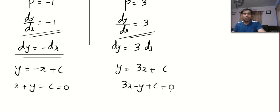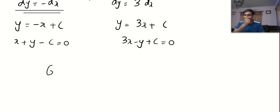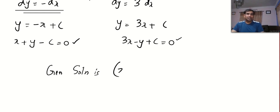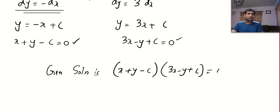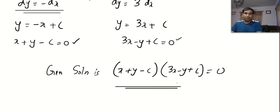Now what will be the general solution? We got the individual solutions. The general solution is: x plus y minus c, multiplied by 3x minus y plus c, is equal to zero. So that is it.